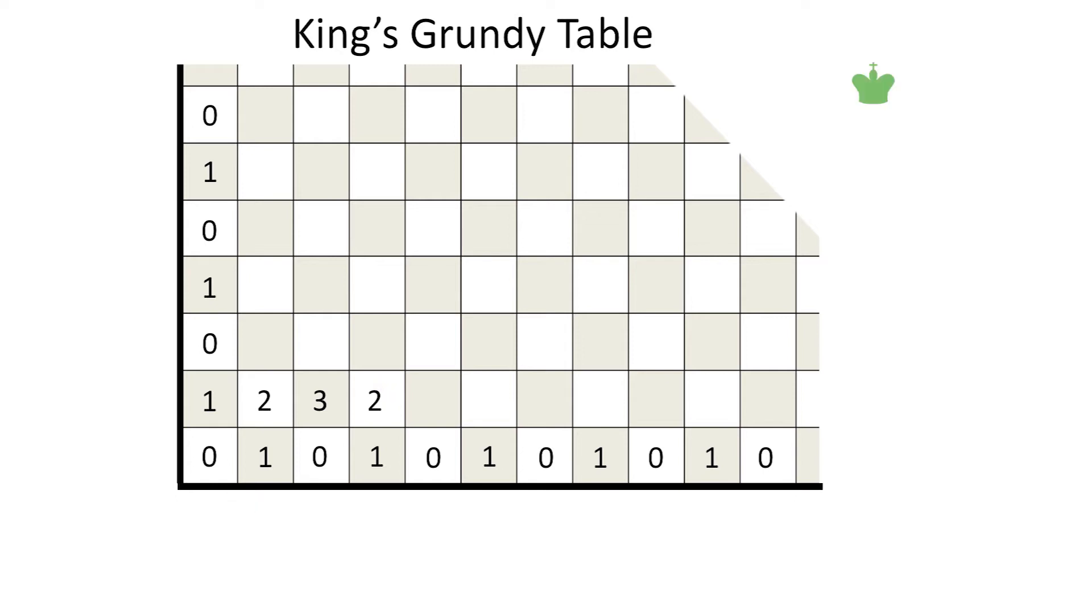Resuming our calculations, the next G is the mex of 2, and 1, and 0. This value is 3. Similarly, as we continue along this row, we find that 3s and 2s alternate.